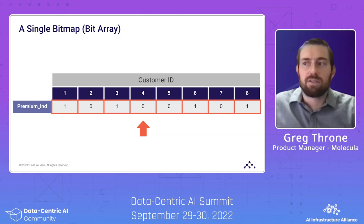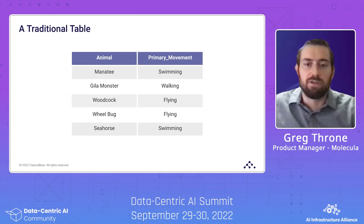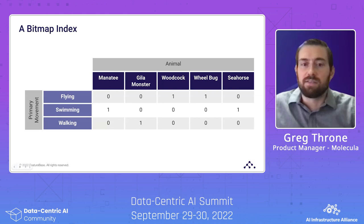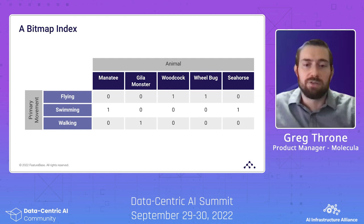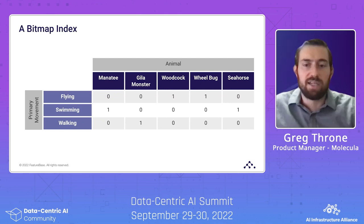This is best represented with another example. Let's take a traditional table of animals with a bunch of attributes about those animals. Here we need to store categorical fields such as primary movement, which tracks how an animal primarily moves. A bitmap index is a type of database index made up of bitmaps — easiest to imagine as a large matrix filled with just ones and zeros. Each bitmap is essentially a pointer to a certain value in a column. With bitmap indexing, those values are only stored once, with each animal only requiring a single bit set to indicate its movement type.